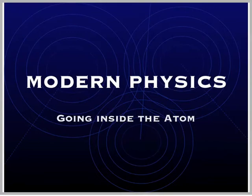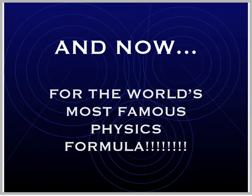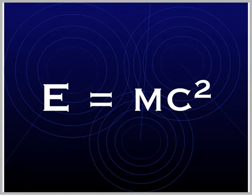More Modern Physics. And now, for the world's most famous physics formula, E equals mc squared. This is a formula that's so famous that even people that have never taken a science course have heard of this formula.